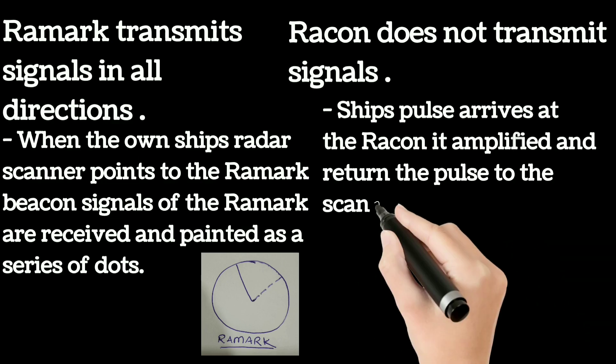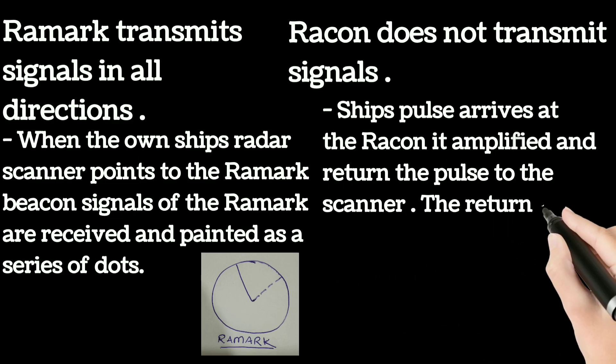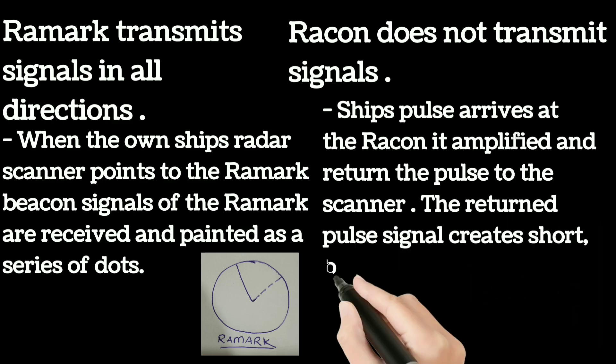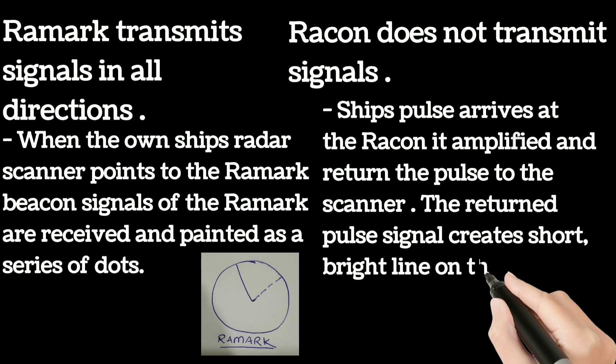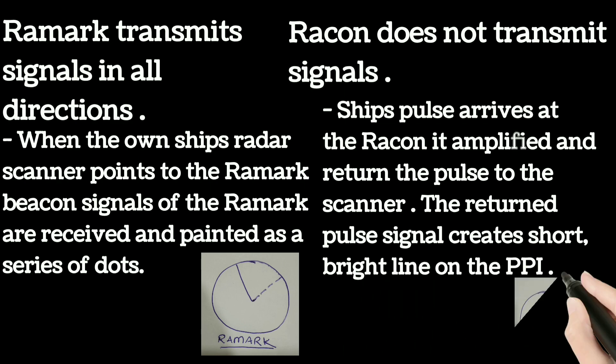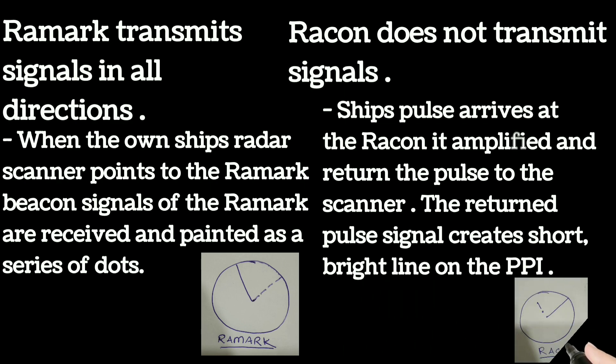it amplifies and returns the pulse to the scanner. The return pulse signal creates short, bright lines on the PPI as shown in the figure.